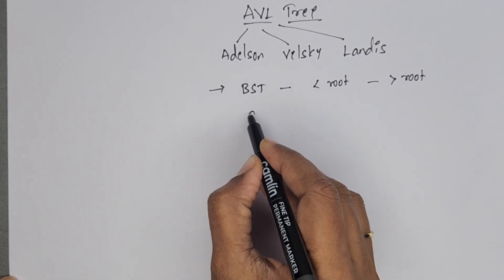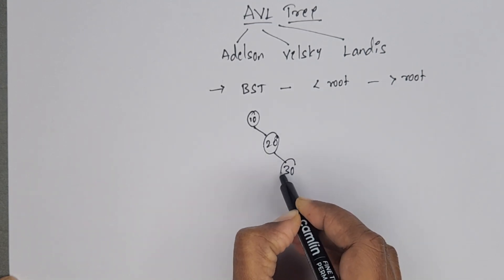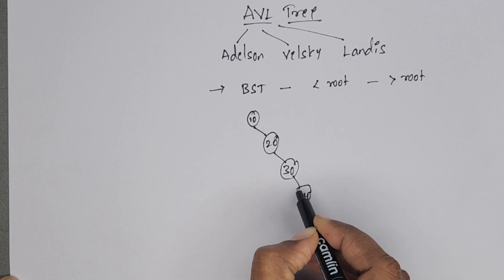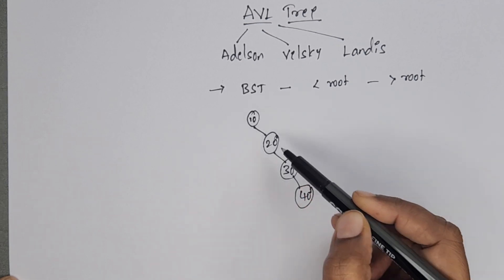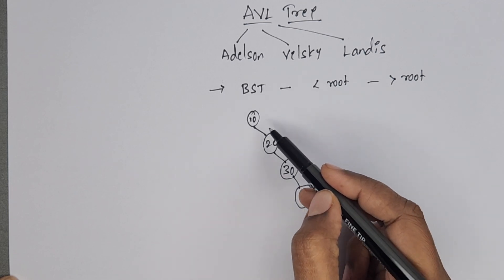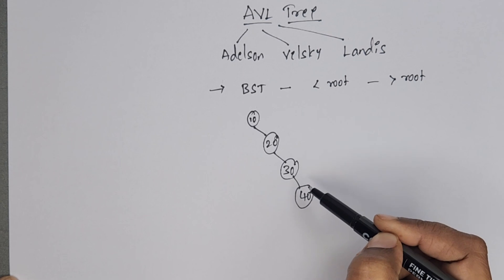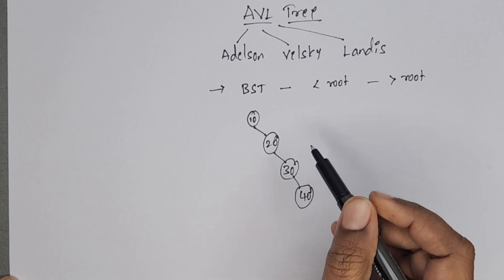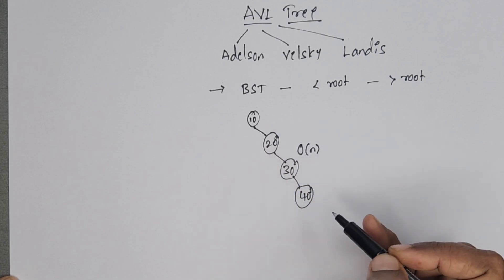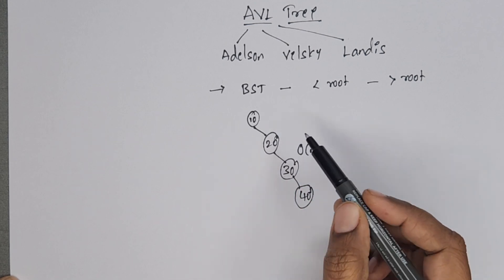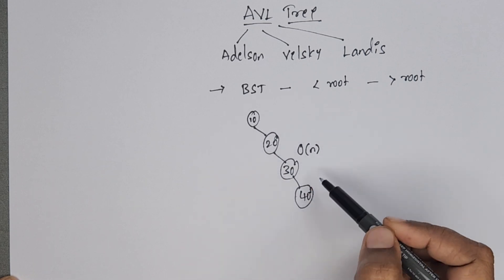For example, if the elements are 10, 20, 30, 40 — if this is a binary search tree, all right subtree elements are greater than root. If we want to search element 40, we have to compare with 10, 20, 30 and then 40. So worst case time complexity is O(n), where n is the number of elements in the tree. It is not balanced.